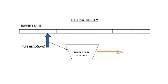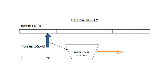Let us now come across the topic known as the halting problem. Before going into the problem, let us check the diagrams. As we know, in a Turing machine we have an infinite tape as the data structure — you can store data and read or write data with the help of the tape head. This is what you already know about the Turing machine.